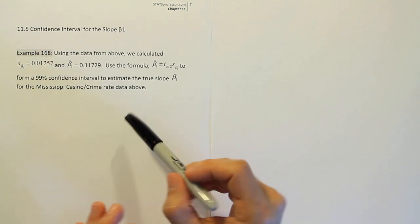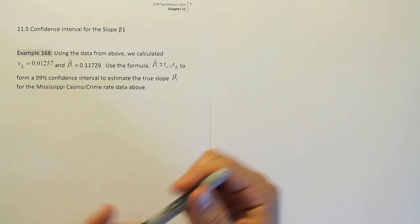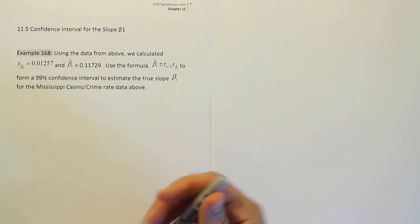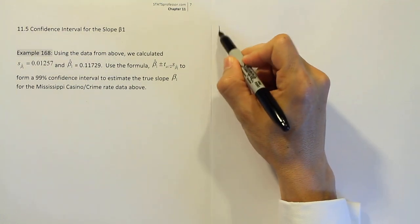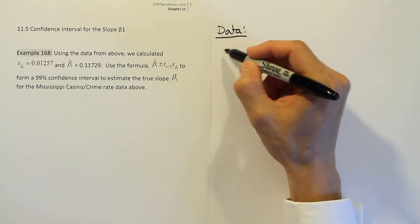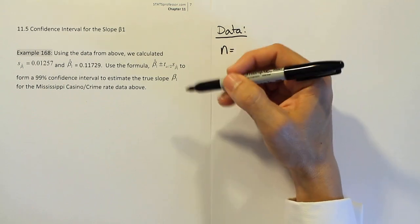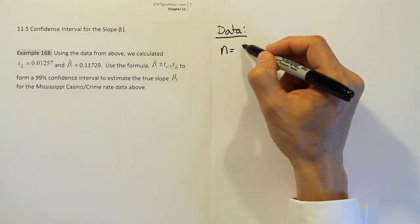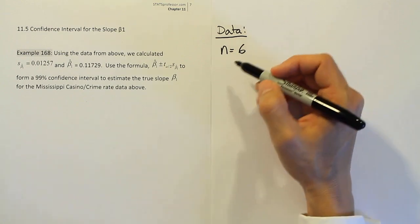This is based on the work that we did in the previous problem and they gave us a lot of this information that we need to do the problem. So let's start off with the first thing we do normally for confidence intervals. We normally copy down the data. So since they gave us the data here, we have an easy task. N is just the number of paired values they gave us in the previous problem. It was 6 if you remember. Our sample size was 6 there.